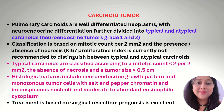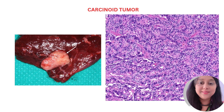Pulmonary carcinoids are well-differentiated neoplasms with neuroendocrine differentiation, further divided into typical and atypical carcinoids — neuroendocrine tumors grade 1 and 2. Classification is based on mitotic count per 2 mm² and the presence or absence of necrosis. Typical carcinoids have a mitotic count less than 2 per 2 mm², absence of necrosis, and tumor size more than 0.5 cm. Histological features include neuroendocrine growth pattern, monotonous tumor cells with salt-and-pepper chromatin, inconspicuous nuclei, and moderate to abundant eosinophilic cytoplasm. Treatment is surgical resection and prognosis is excellent.